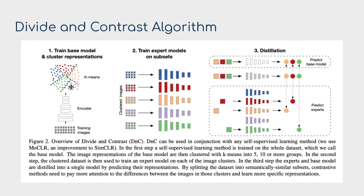This gives each expert model a more semantically similar local batch for contrastive learning. Originally we had a billion training images; now we divide into k-clusters and train subset models on clusters with more semantic similarity because they share similar representations. The quality of the initial representation learning will have a huge impact on how semantically similar these clusters are—resulting in subsets of, say, different dog breeds or cats.